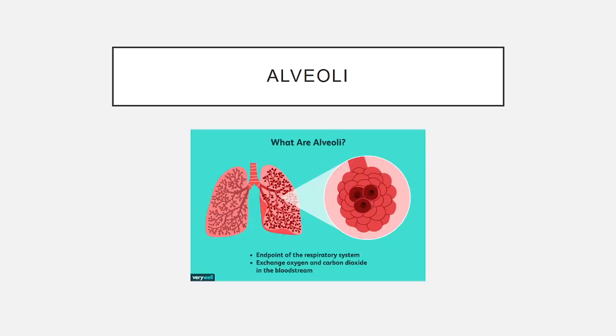Alveoli. The alveoli are the end point of the respiratory system and are where the exchange of oxygen and carbon dioxide in the bloodstream occurs.